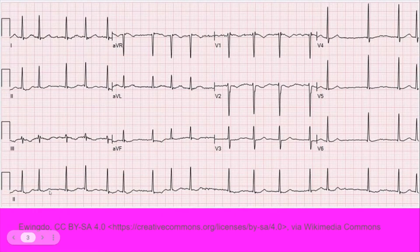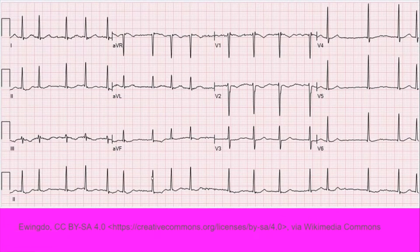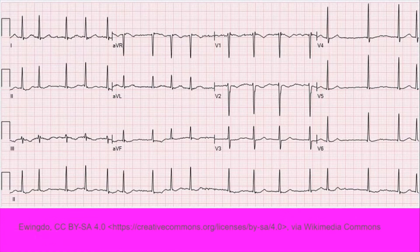Here we can see there are no clear P waves, and the QRS complexes are irregular. For example, this one here is short, this one is long, this one is a little shorter, and then kind of average, but there's no regular QRS rhythm. The length from one to another is irregular, which is why they're said to be irregularly irregular — no P waves. That's how you can tell the patient is in AFib.